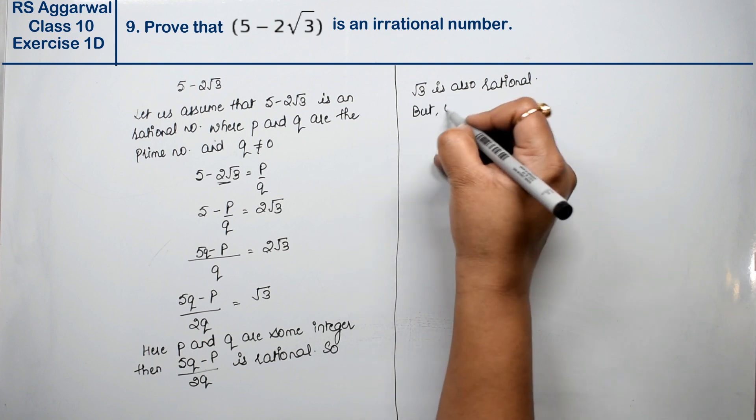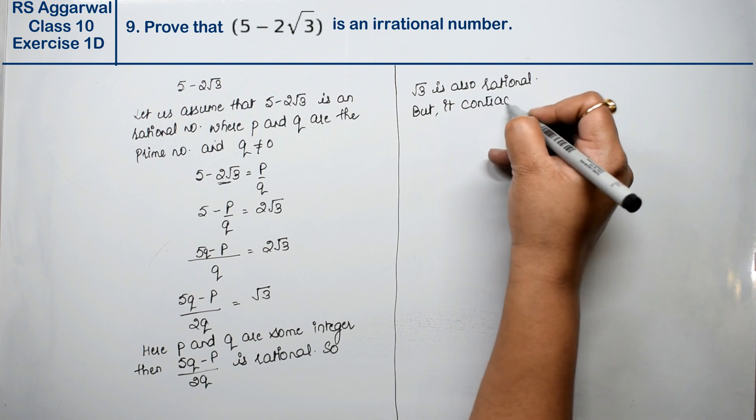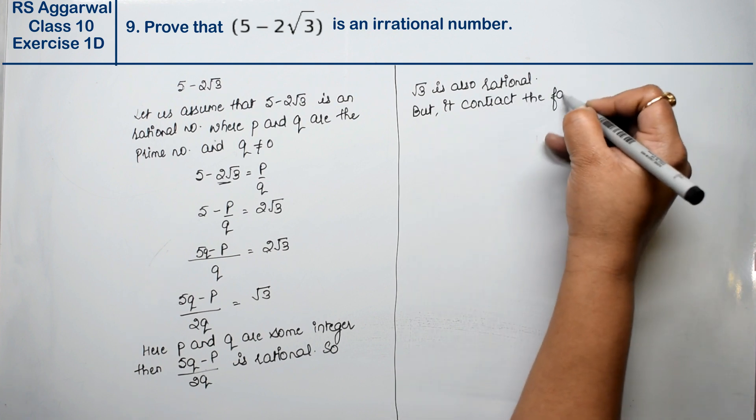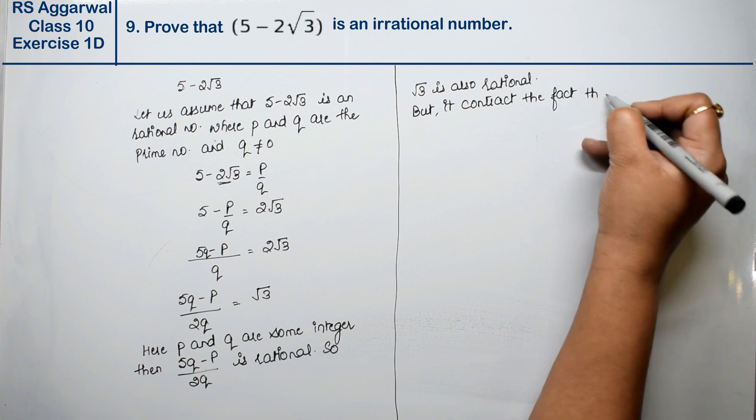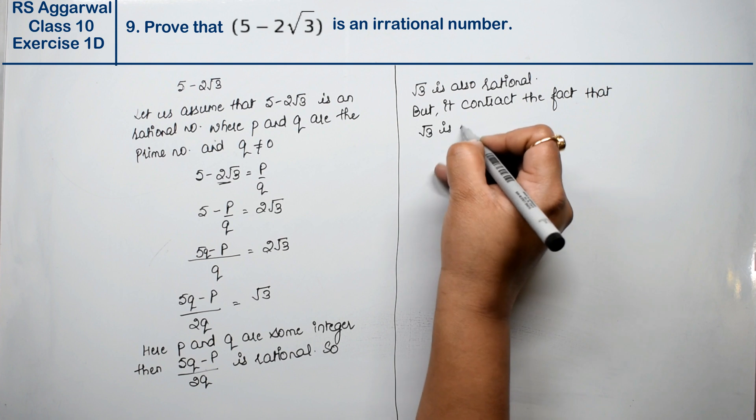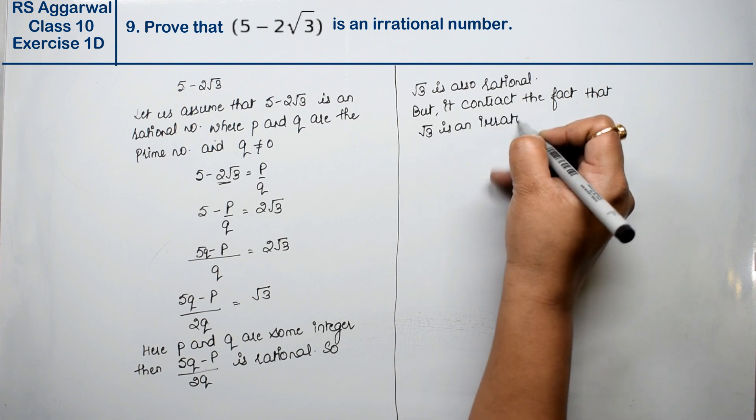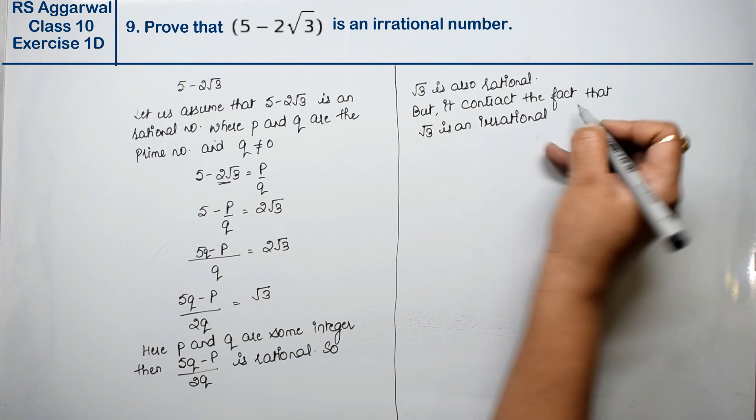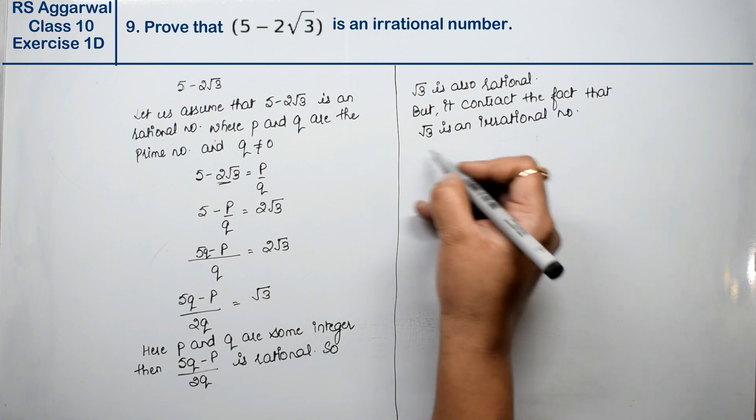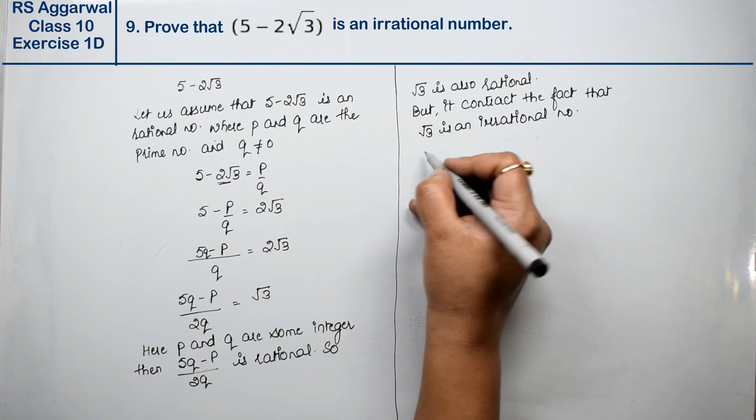But it contradicts the fact that root 3 is an irrational number. Root 3 is an irrational number. So when this contradicts that root 3 is irrational number, so...